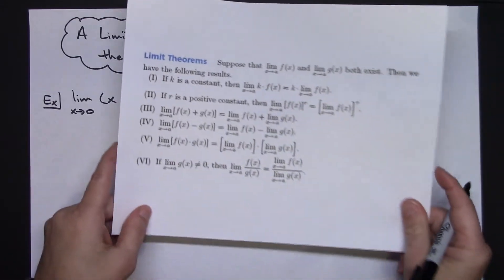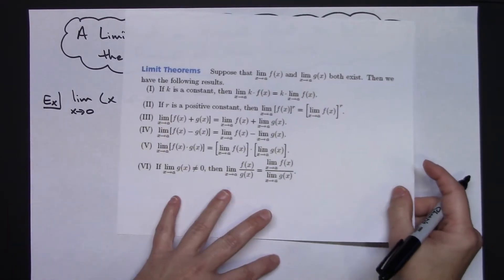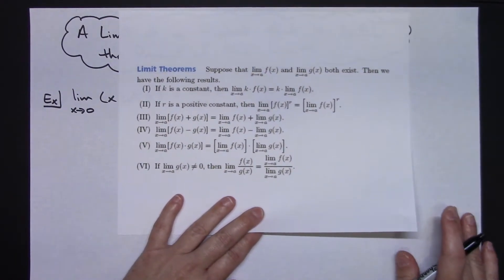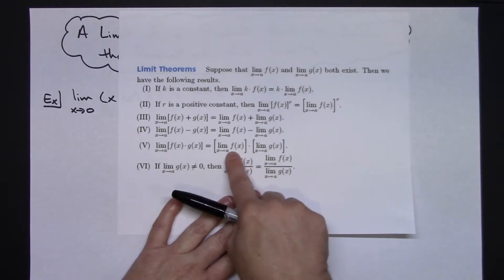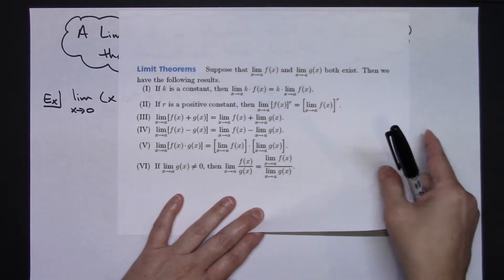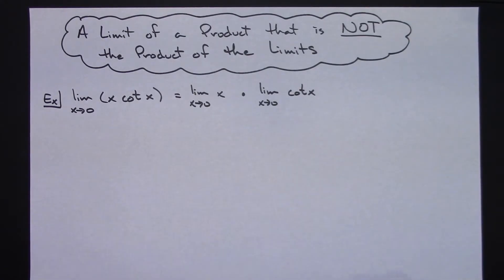And you would do that because if here's the limit theorems that you have learned, if I'm taking the limit of a product then I can take the limit of each of them individually. And so you might think, okay that's what I'm going to do on this.